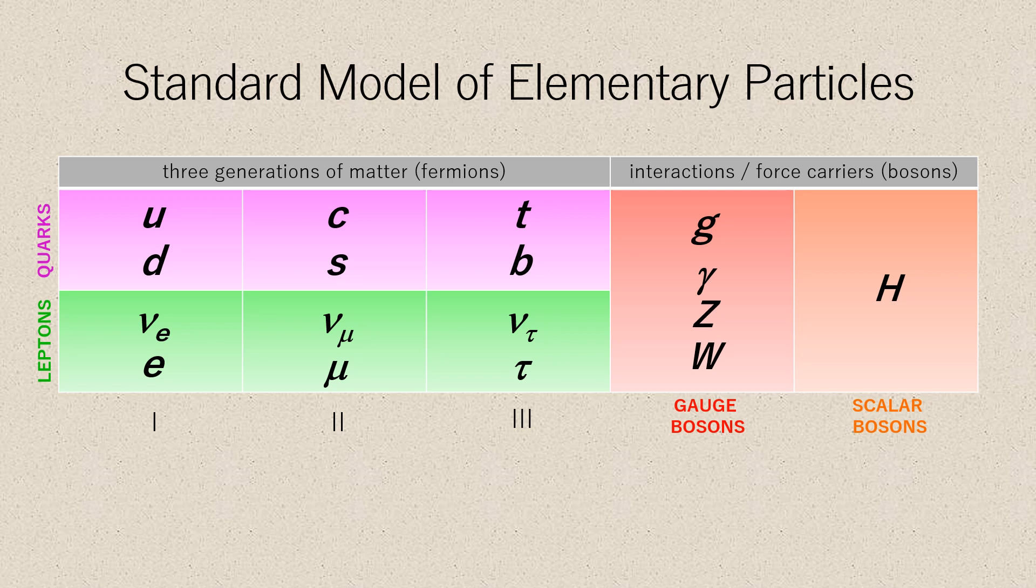The eight gluons mediate the strong interactions between color charged particles, the quarks. Gluons are massless. The gluons and their interactions are described by the theory of quantum chromodynamics.